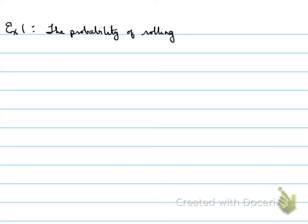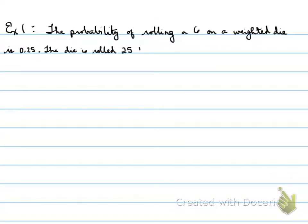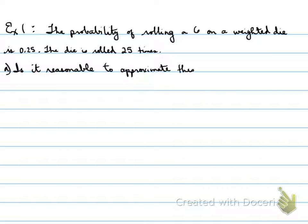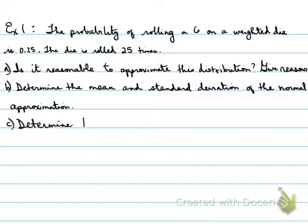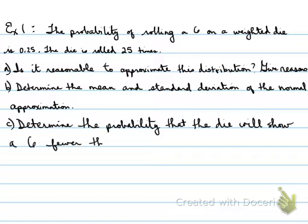Example 1. The probability of rolling a 6 on a weighted die is 0.25. The die is rolled 25 times. Part A: is it reasonable to approximate this distribution with a normal distribution? Give reasons. Part B: determine the mean and standard deviation of the normal approximation. Part C: determine the probability that the die will show a 6 fewer than 8 times.